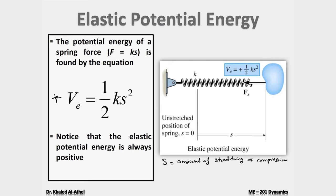For two positions, s1 is the spring length at position 1 minus the unstretched length, and s2 is the length at position 2 minus the unstretched length. Sometimes the lengths are given and you must subtract; sometimes the deformation amount is given directly.